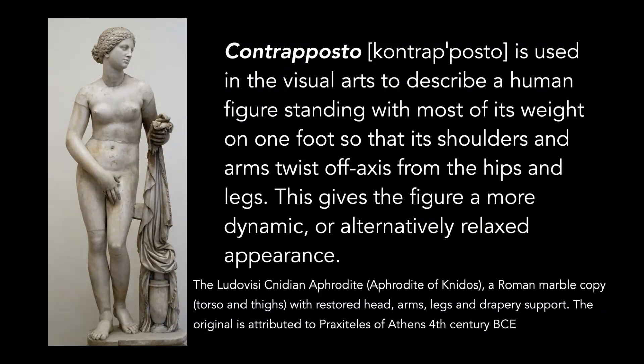Aphrodite is another fine example of contrapposto. It's a simple device used to describe the human figure standing with most of its weight on one foot, so the shoulders and arms twist off axis — a more refined version of what we saw the Egyptians doing. It gives the figure a more dynamic or alternatively relaxed appearance, a more human appearance. We now see gravity in the human form: the effects of the physical world, the shift of the hip, the resting on one leg, the pushing out of the other, the arm outstretched for balance — a very refined recognition of the human form in space.